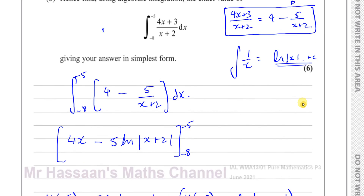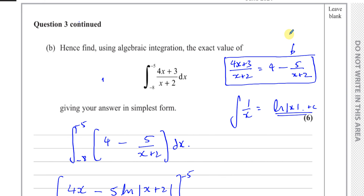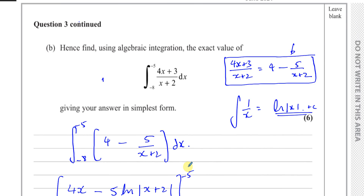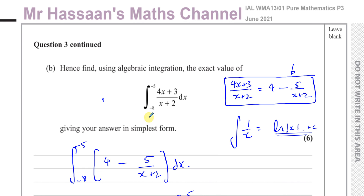That's the end of question 3 from the P3 paper. Other questions from this paper can be found via the link at the end of the video. Integration is relatively new to P3 — it used to only appear in C4 — and now covers integration by recognition, ln-type integration, and trig integration. You can subscribe to my channel and find links to other International A-Level EdExcel papers including P1, P2, P4, M1, S1, and some IGCSE Cambridge papers. Thank you for watching.